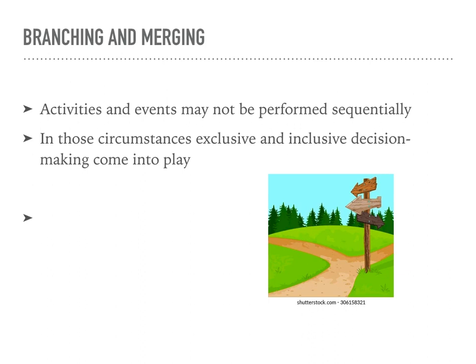Inclusive decisions, represented by an inclusive gateway in BPMN — a diamond shape with multiple incoming and outgoing flows — are used to model decision points where multiple paths can be taken simultaneously based on specified conditions. When a process reaches an inclusive decision gateway, the conditions associated with each incoming flow are evaluated. All flows with conditions that evaluate to true will be followed concurrently, allowing multiple paths to be executed simultaneously. Inclusive decisions are useful when there is a need to consider multiple possibilities or allow for parallel execution of activities based on different conditions, enabling a more flexible and inclusive approach to decision making.